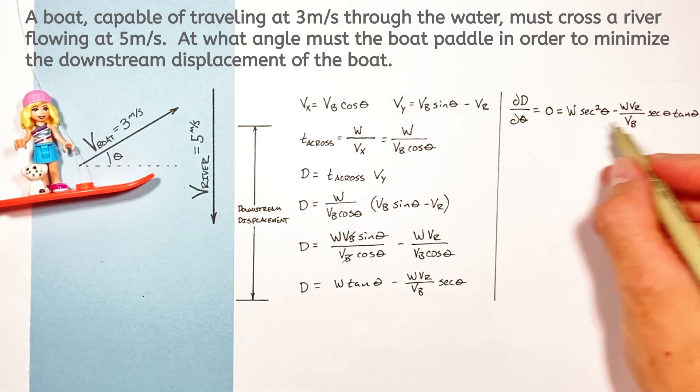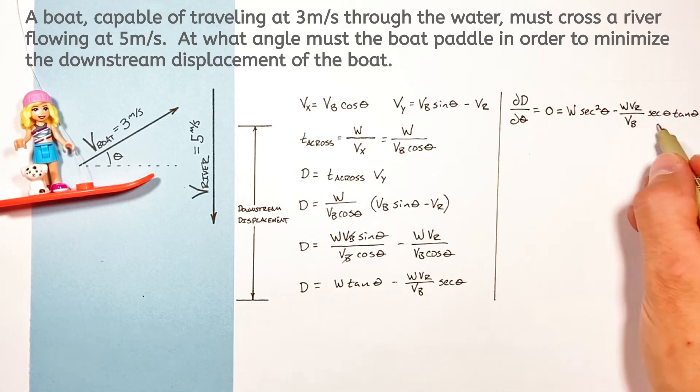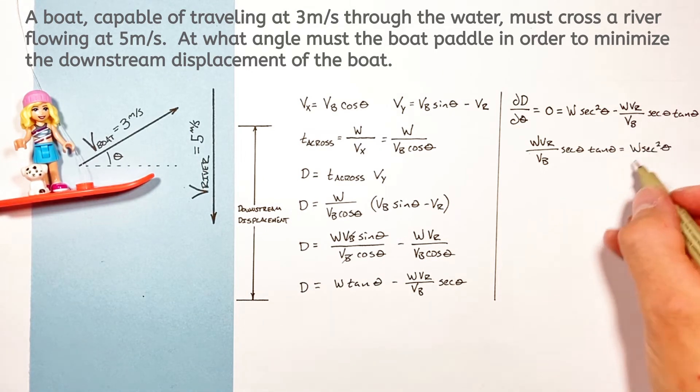Now I know a lot of times people see secant and they freak out a little bit but let me show you what's actually happening here. I'm gonna move one of these terms about this one over to the other side of the equals sign and right away we see the width of the river is actually irrelevant here.